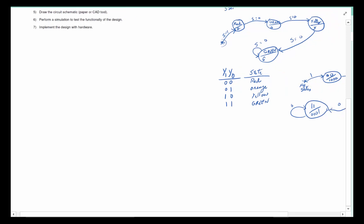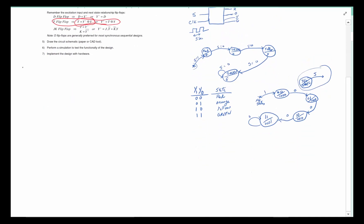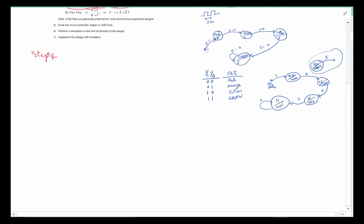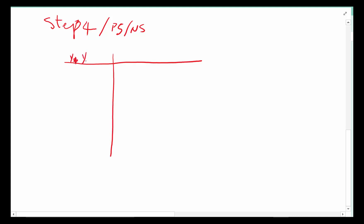Let's use the work we've done already. Steps one through three are done; now we're starting step four. The goal here is to do the present state/next state table in order to write the equations for output and excitation input, and this time we have to use T flip-flops. We have two state variables Y1 and Y0, plus the start input S, and we add columns for the next state Y1-plus and Y0-plus. But we can't just say Y1-plus and Y0-plus are the same as T, because T is different.